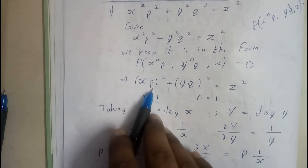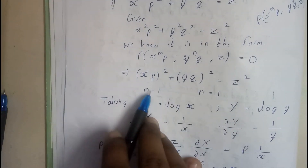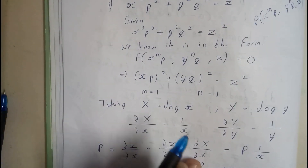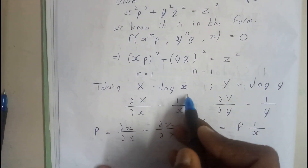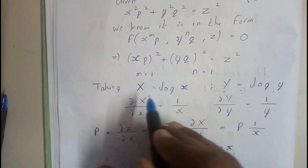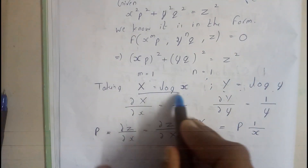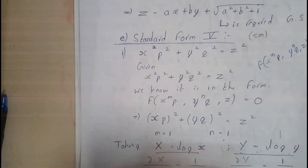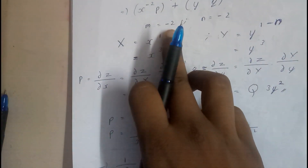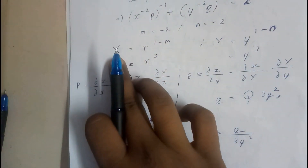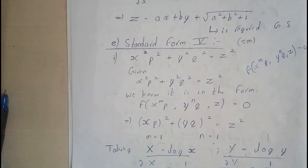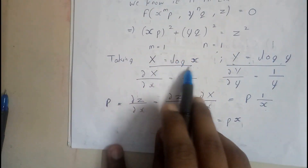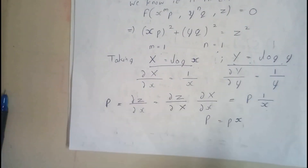The power should be 1, so we make x^p a whole square. The m and n values will be 1. If m=1 and n=1, then capital X equals log x and capital Y equals log y. If m equals 2, 3, or other values like minus 2, then capital X equals x^(1−m) and capital Y equals y^(1−n).